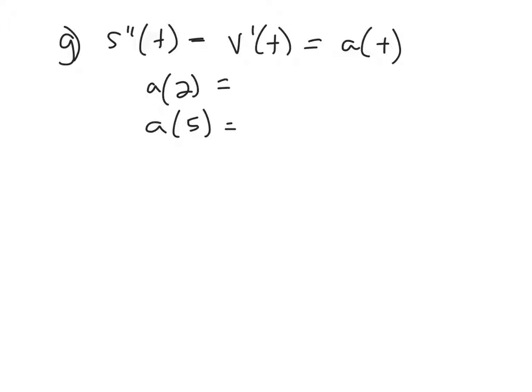Find acceleration at t equals two and t equals five, then determine if the particle is speeding up or slowing down at each point. This has everything to do with the signs of velocity and acceleration. If velocity is positive and acceleration is also positive, you're traveling forward and accelerating forward — so you're speeding up.